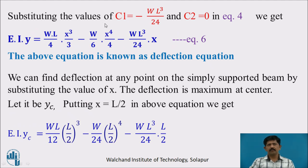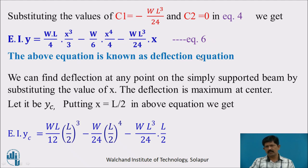Substituting C1 = −WL³/24 and C2 = 0 in Equation 4 gives: EI·y = WL/4·(x³/3) − W/6·(x⁴/4) − WL³/24·x (Equation 6). This equation is known as the deflection equation, and we can find the deflection at any point in the beam by substituting the value of x.